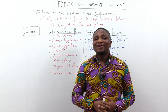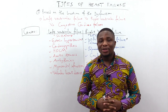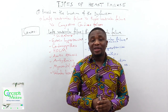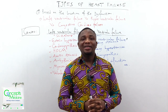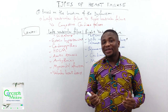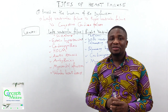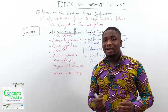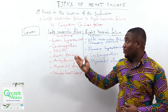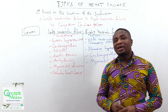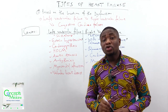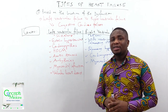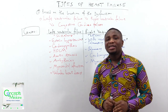The final classification is based on the location of dysfunction: left ventricular failure, right ventricular failure, and congestive cardiac failure. Left ventricular failure means the left ventricle fails to pump blood commensurate with the body's metabolic requirement. For its causes, we use the mnemonic 'SCAMV' — systemic hypertension is the most common cause of left ventricular failure.